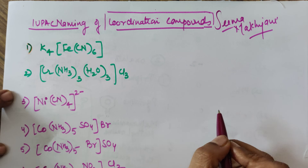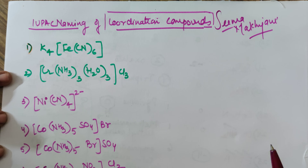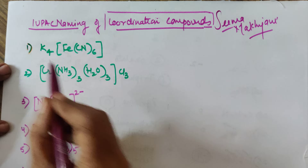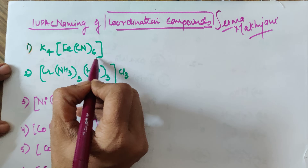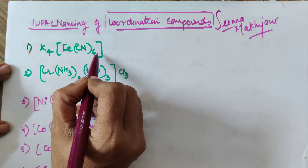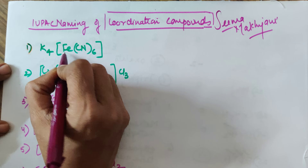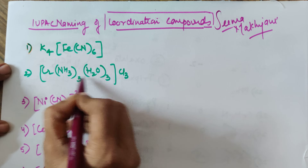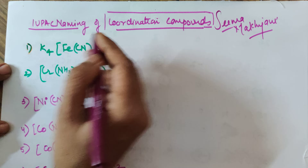Before I move to each coordination compound's IUPAC name, I'll give you the rules simultaneously — I am not providing a separate rules list, we'll do the rules as well as the nomenclature together. In a coordination compound, the counter ion is named first, then the square bracket. Inside the square bracket, the ligands are named first — in alphabetical order — and then the central atom.